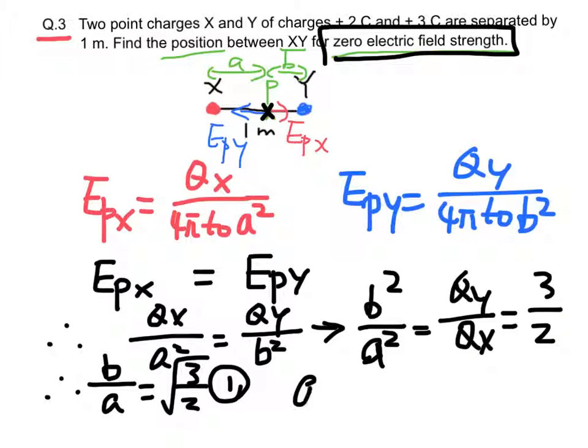Also, we have a plus b equal to 1 meter.